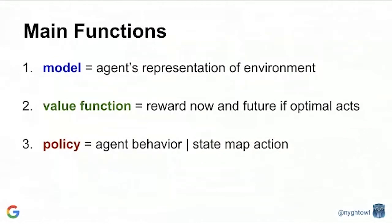These are the components giving you a sense of how reinforcement learning works. Now let's talk about the functions. There are core functions you're going to work with, falling into these main categories: your model, your value function, and the policy. The model itself is the agent's representation of the environment, the value function extrapolates reward back so there's a value associated to every state or state-action pair, and your policy models behaviors and explores those models.